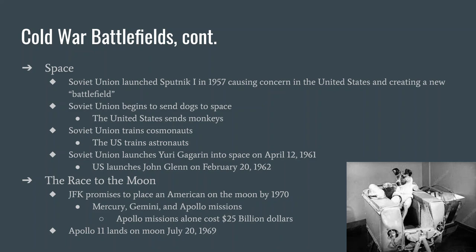After animal testing was done, it came time to put humans in space. The Soviet Union began a cosmonaut training program and the United States began an astronaut training program — a race to get the first person into space. On April 12, 1961, the Soviet Union launched Commander Yuri Gagarin into space, who became the first person to orbit the Earth. The United States responded on February 20, 1962, by launching John Glenn into space, who would eventually become a senator from Ohio.